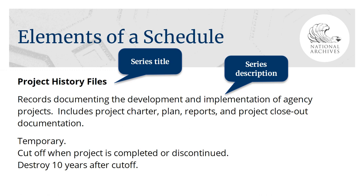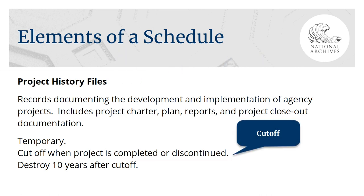The rest of the schedule reads: Temporary — cut off when project is completed or discontinued; destroy 10 years after cut off. The disposition is usually made up of two different parts. The first part, the cut off, determines when a file will close and when its retention clock will start. The cut off for this example reads: cut off when project is completed or discontinued.